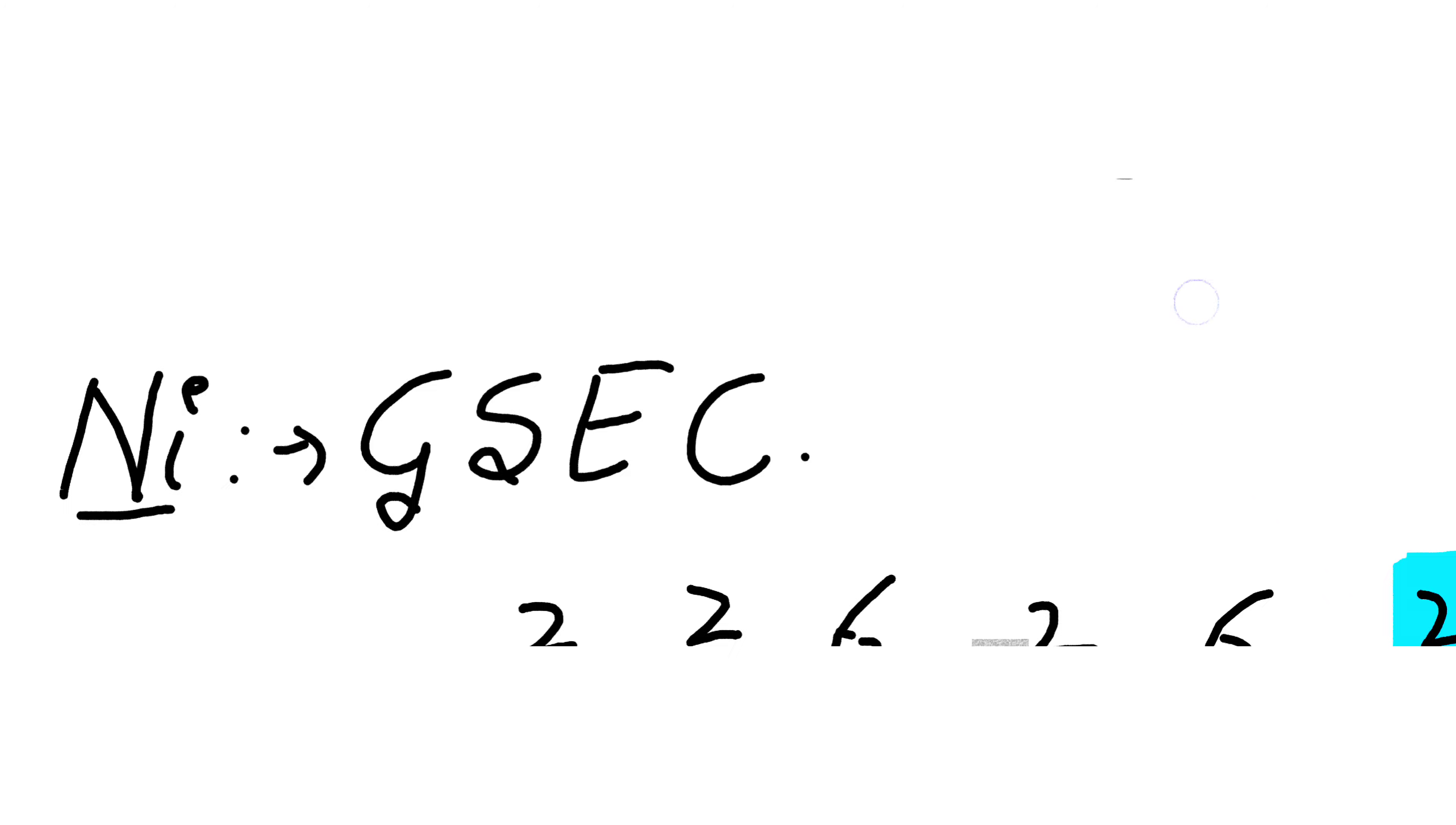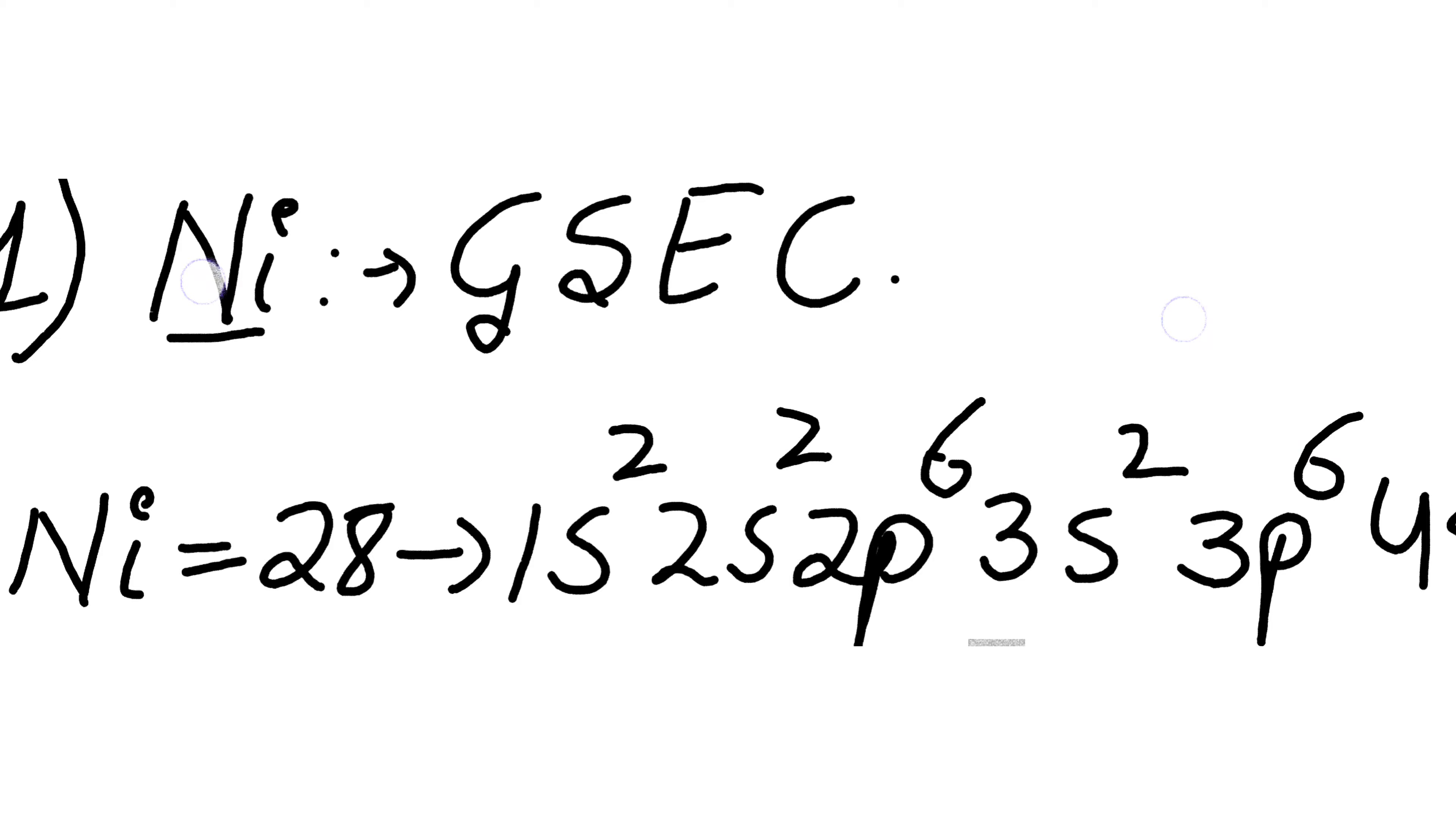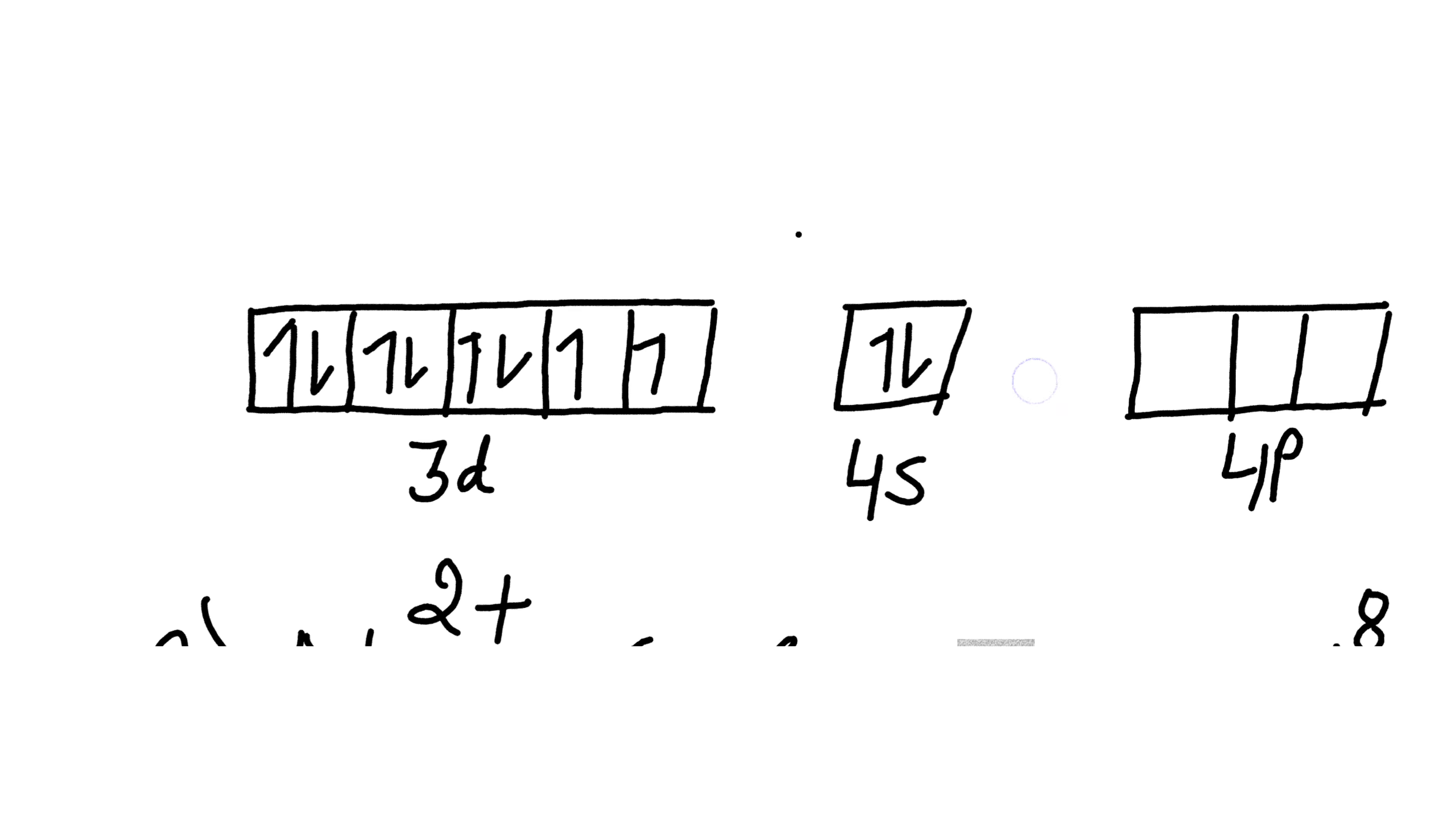Now we will write the ground state electronic configuration of nickel. We know that its atomic number is 28. So the configuration will be 1s² 2s² 2p⁶ 3s² 3p⁶ 4s² 3d⁸. If we draw the orbitals, there will be eight electrons in 3d and two electrons in 4s. Our 4p is empty with no electrons.